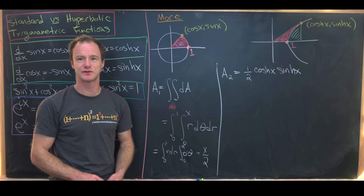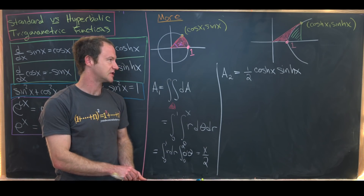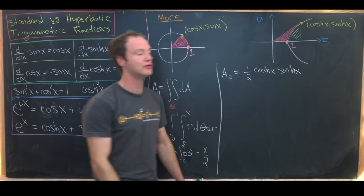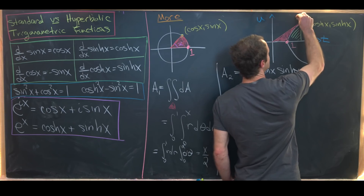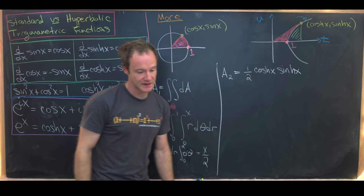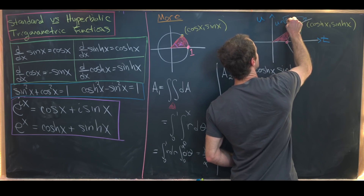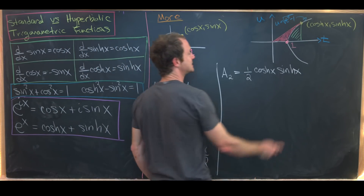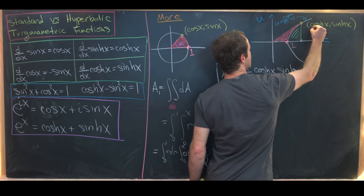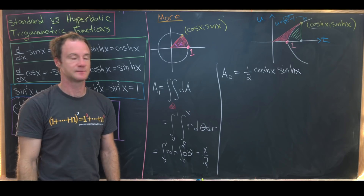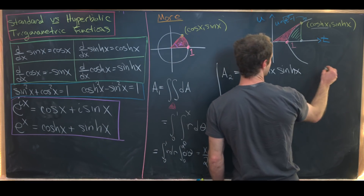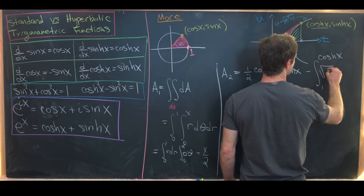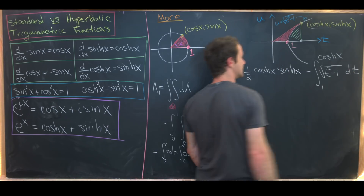To find the green area, we need to express the hyperbola as a plain curve rather than a parametrized curve. If we let t be the horizontal axis and u the vertical axis, we can eliminate the parameter to get u equals the square root of t squared minus 1. So we need to integrate from 1 to hyperbolic cosine of x of the square root of t squared minus 1 dt, and we subtract that integral.